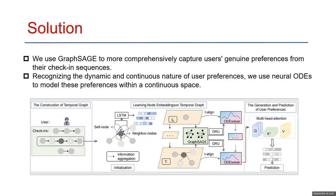To address the above challenges, we propose to use GraphSage to capture users' true preferences, and integrate it with neural ODEs to model these preferences from a discrete to a continuous space. This approach allows us to make more effective recommendations.